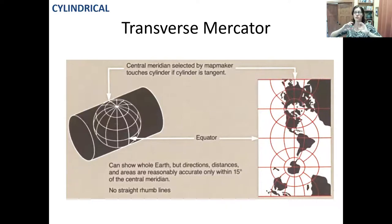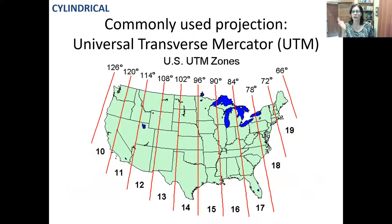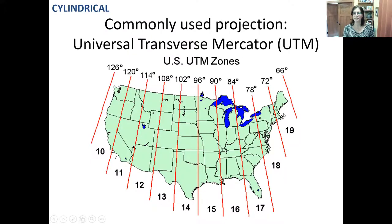Another common projection is the transverse Mercator, also known as Universal Transverse Mercator or UTM. This is a cylindrical projection turned on its side, so instead of minimizing distortion at the equator, it minimizes distortion along a line of longitude. UTM projections cover the entire Earth in zones of six degrees each. For Massachusetts, Western Mass might use zone 18 and Eastern Mass zone 19. UTM is good for features that are oriented north-south, like the state of California.